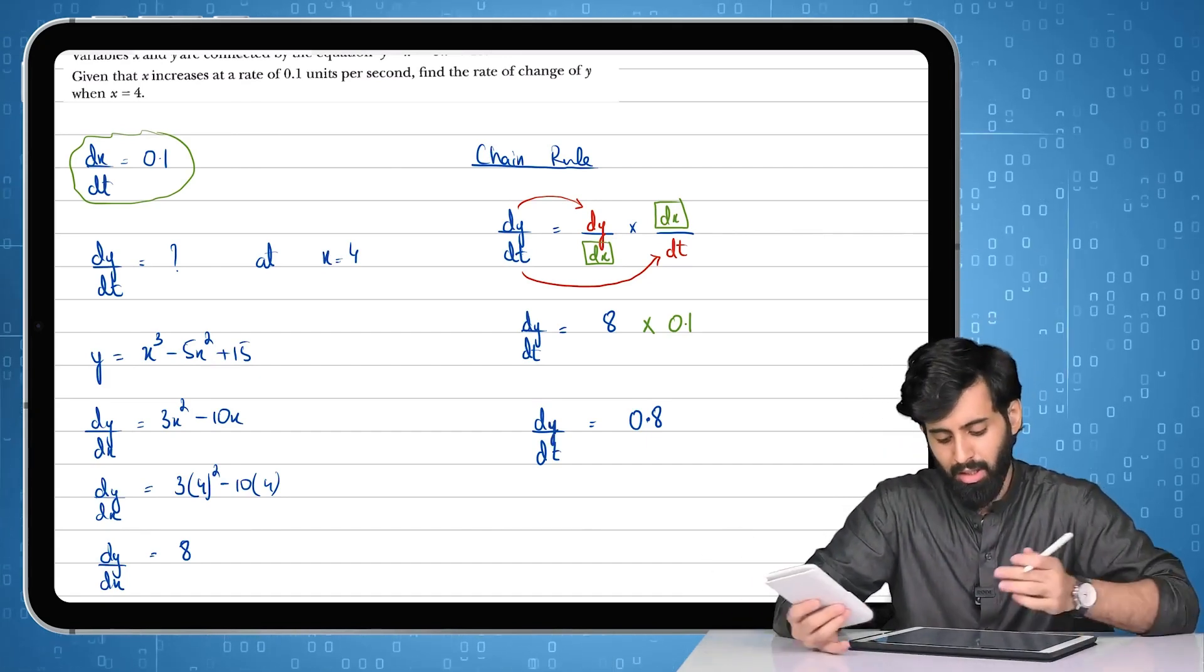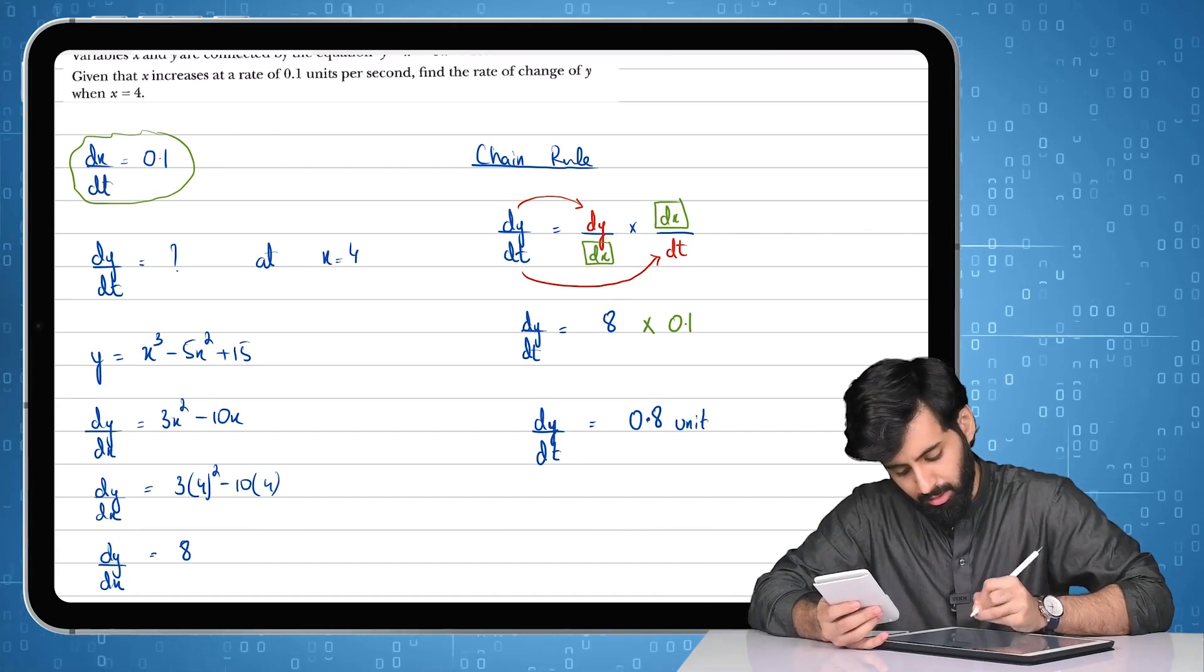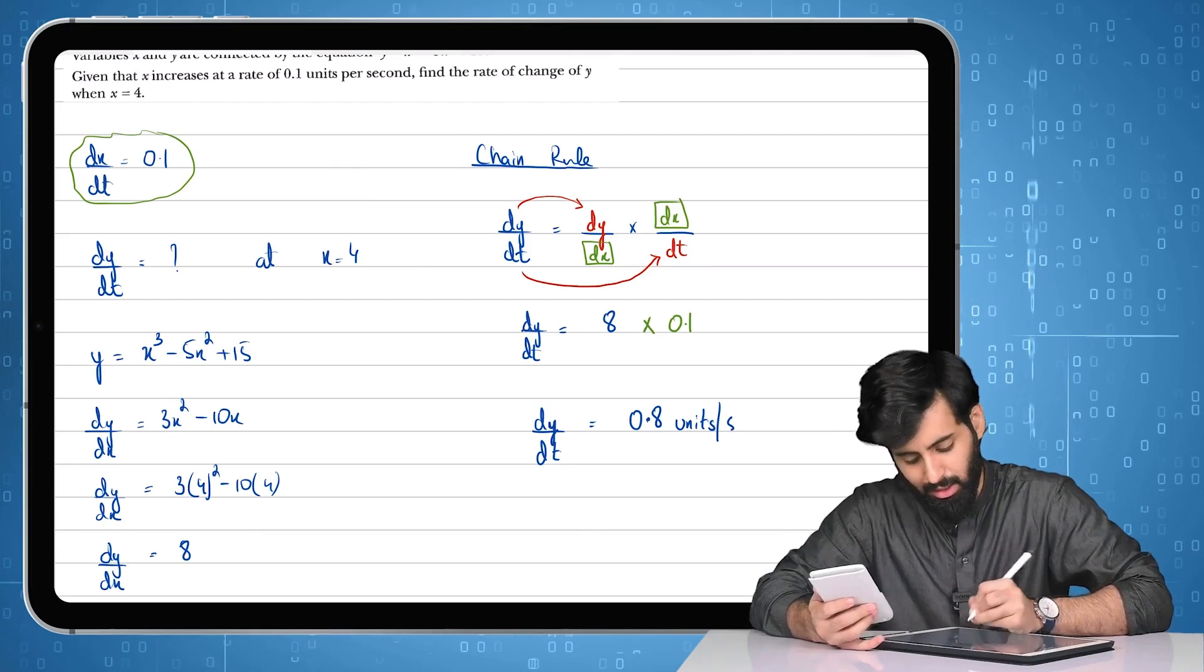So there you go. Now we have dy/dt. Make sure that you write the unit, which is going to be basically units per second.